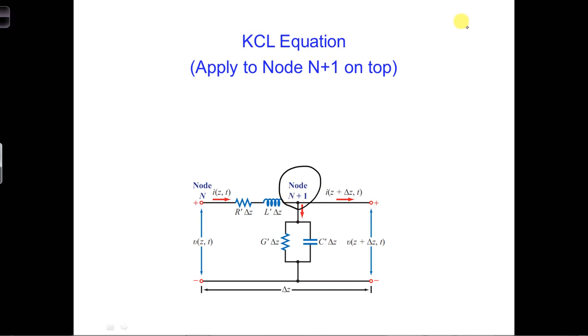Applying Kirchhoff's Current Law to the node labeled N plus 1, we get the following terms.